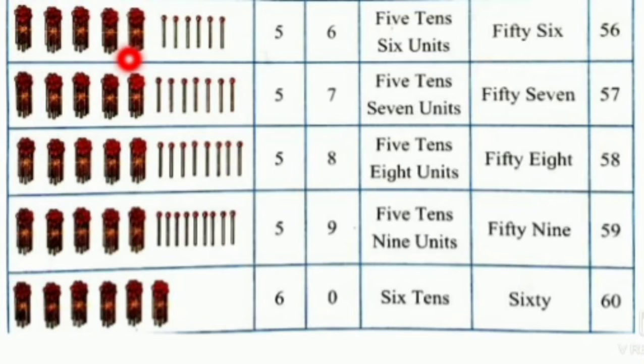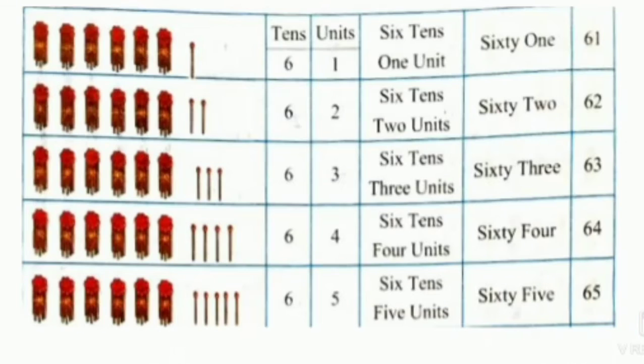5 tens, 6 units, 56. 5 tens, 7 units, 57. 5 tens, 8 units, 58. 5 tens, 9 units, 59. Then here we have 6 tens and 0 units. So 6 tens and 0 units is 60.